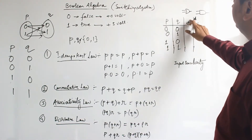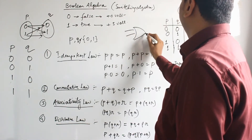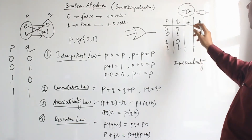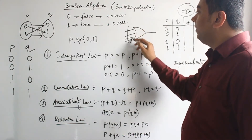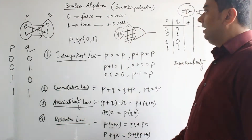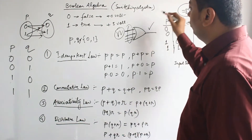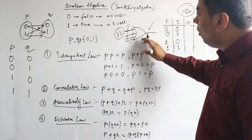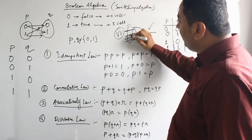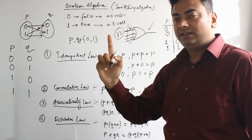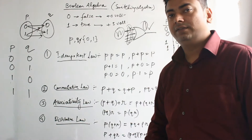The OR gate is represented by a specific symbol. For an OR gate with N inputs, if any one of the input values is 1 (true), then the output will be true. This means the input sensitivity for an OR gate is 1 — if we find any input as 1, we don't need to check the others; the output is straightforwardly 1.